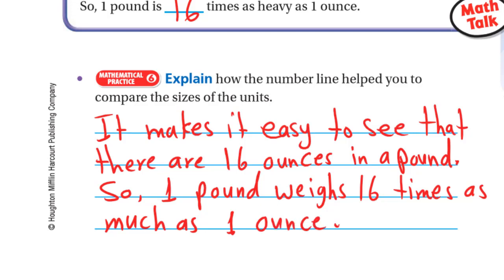So until now, what is important to know is that one pound equals 16 ounces. If you want to convert pounds to ounces, you multiply by 16.